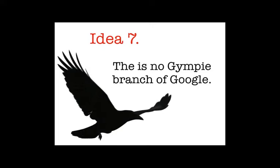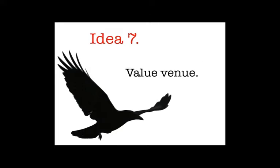Idea seven — poor old Gympie. There's no Gympie branch of Google, which means we need to value venue as much as understand that we're competing in a world where people think of information provision as a single international monolith. We need to think about those venues that we have and actually advertise them as a value.